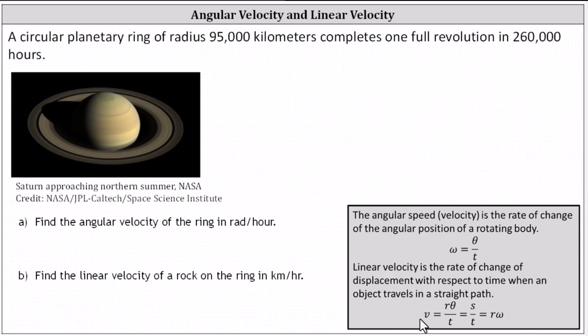Going back to the question, we'll begin by determining the angular velocity. Because the ring completes one full revolution in 260,000 hours, the angular velocity omega equals the angle theta is two pi, because one full revolution is two pi radians, divided by the time t, which in this case is 260,000 hours.